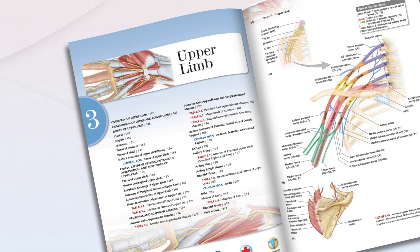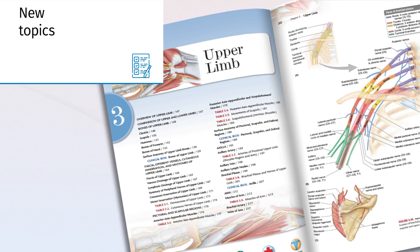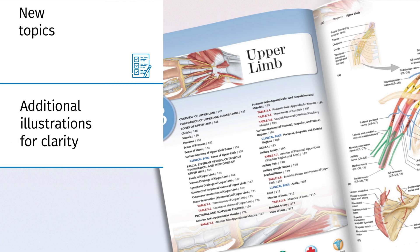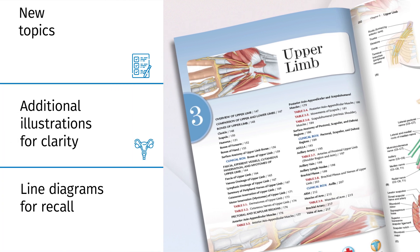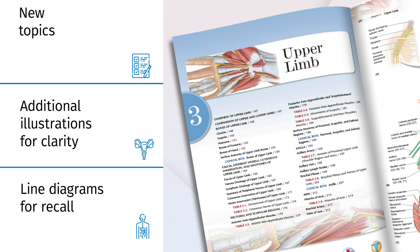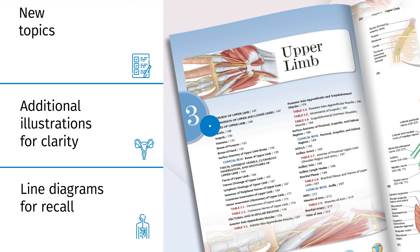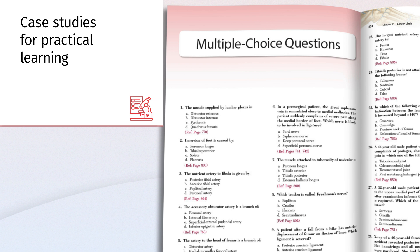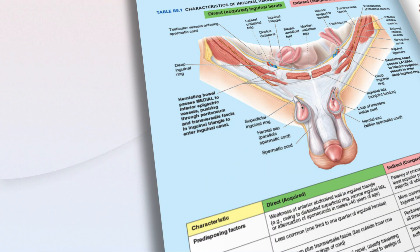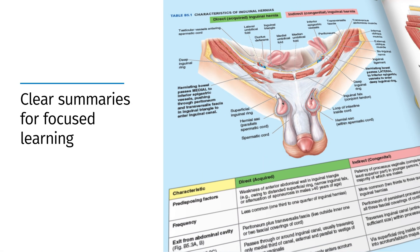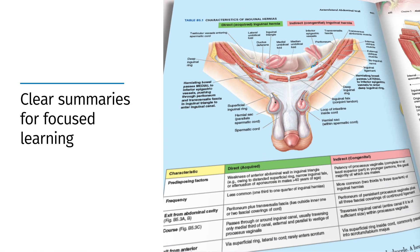Explore summaries of upper and lower limb nerves and arteries, with additional illustrations for surface anatomy, medical imaging, and line diagrams for easy recall and reproducibility. Gain real-world insights with case studies to test knowledge and understand practical applications, complemented by chapter-end MCQs and online review tools. The Bottom Line boxes summarize key concepts, ensuring no detail is overlooked.